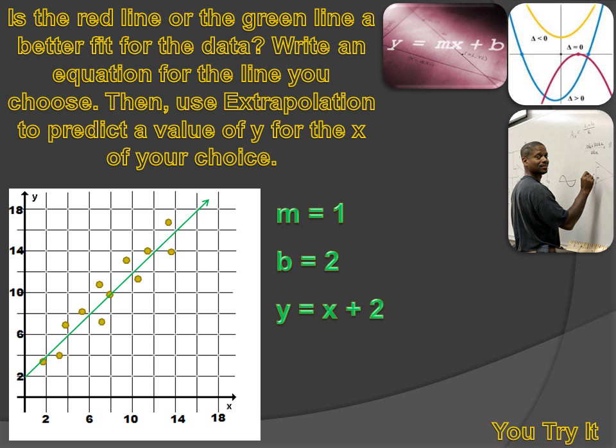Now we're supposed to use extrapolation. Extrapolation is making a projection outside the range of our data set. We're going to use extrapolation to predict the value of y for an x value of our choice. Well, I'm going to pick, oh, I'll pick 16. Because that's beyond my data set. And I can use this graph to tell me what I think the value for y would be when x is 16. I could do that either by using the graph or by putting 16 in for x in the equation. And in either case, I'm going to get y equals 16 plus 2, or 18.